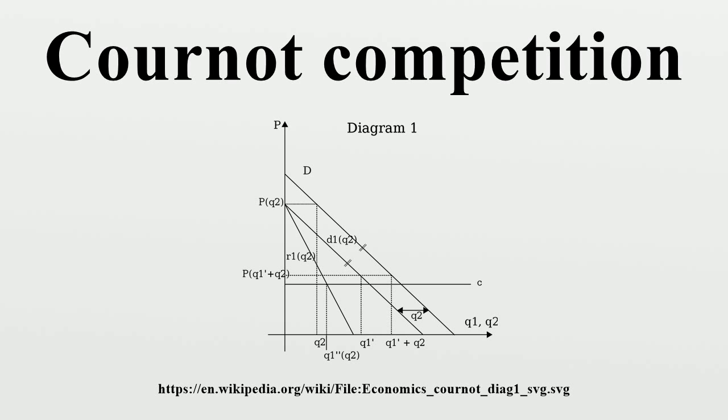Determine firm 1's optimum output. To do this we must find where marginal revenue equals marginal cost. Marginal cost is assumed to be constant. Marginal revenue is a curve with twice the slope of residual demand and with the same vertical intercept. The point at which the two curves intersect corresponds to quantity q1*. Firm 1's optimum depends on what it believes firm 2 is doing.